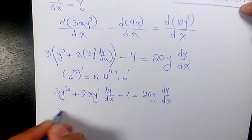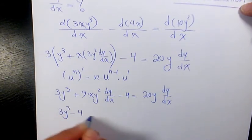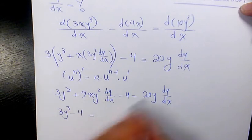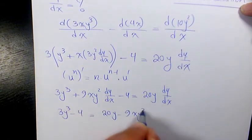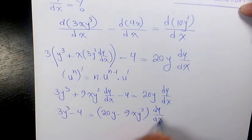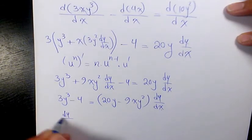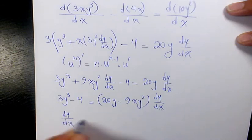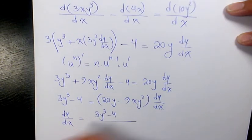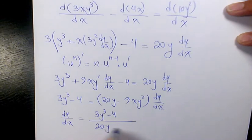Rearranging: 3y³ minus 4 equals 20y dy/dx minus 9xy² dy/dx. So dy/dx equals (3y³ minus 4) over (20y minus 9xy²). That is the final answer.